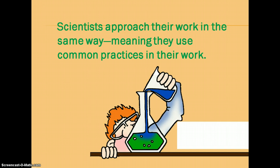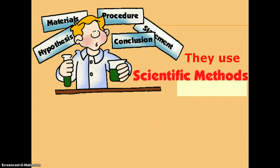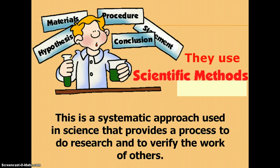So with the scientific method, you have scientists that approach their work in the same way, whether it's a scientist in Japan or in Colombia or in the United States or in Sweden. They all do their work in the same way. They use common practices in their work so that their work can be repeatable by anyone. They use the scientific method. What that really is, is this systematic approach that's used in science, and it provides this process of doing research.